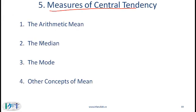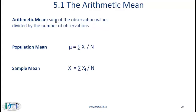Measures of central tendency: the arithmetic mean is the simplest measure. We compute it by adding all observations and dividing by the number of observations. For a population it is denoted by the Greek symbol mu: mu equals the sum of all n observations divided by n. A sample mean is denoted by x-bar and uses the same method — sum all observations in the sample and divide by the sample size n.